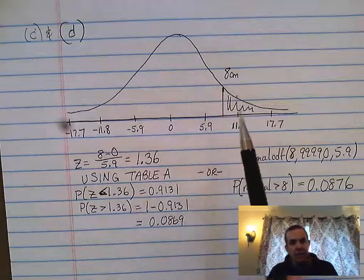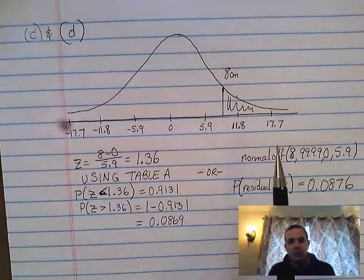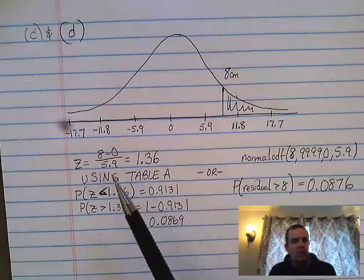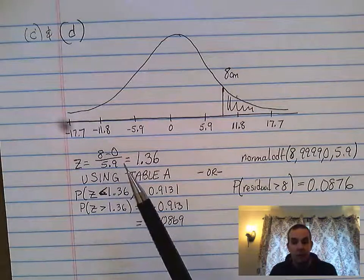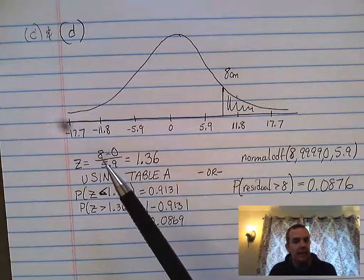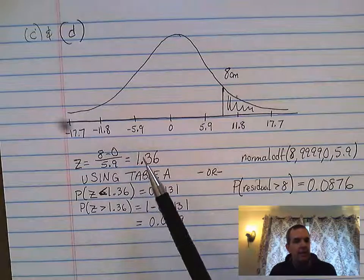Now there's two ways that you can answer this question. Mr. Mike has taught this way. You can figure out the z-score, and the z-score would allow you to say your data value 8 minus your mean 0 divided by 5.9. 1.36 is your z-score.